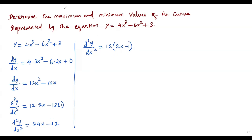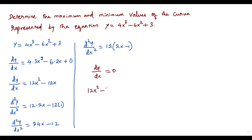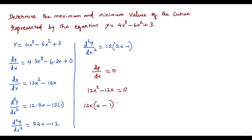Now the next step is to equate the first derivative to zero and solve for x. Setting dy/dx equal to zero means 12x² minus 12x equals zero. We can factor this expression: the greatest common divisor of both terms is 12x, so we factor to get 12x times (x minus 1) equals zero.